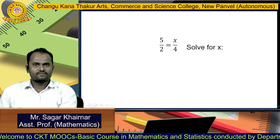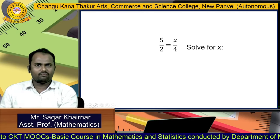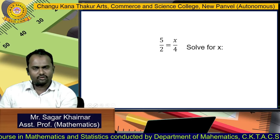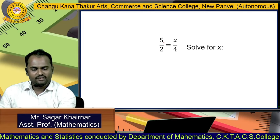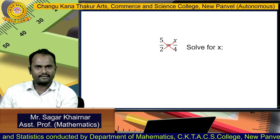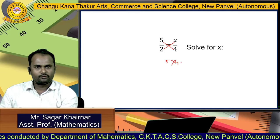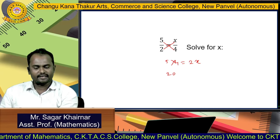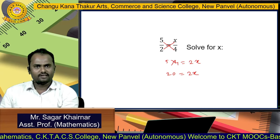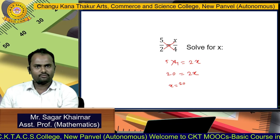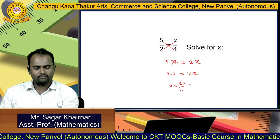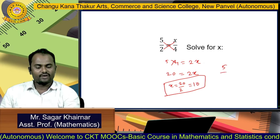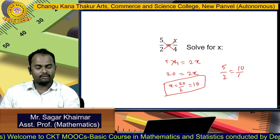Let us solve one example. Suppose we have 5 by 2 equal to x by 4. We can find the value of x using the cross product property. That means 5 into 4 is equal to 2 into x. So we get 20 equal to 2 times x, which gives x equal to 20 divided by 2, that is equal to 10. So the value of x is 10, meaning 5 by 2 can be written as 10 by 4.